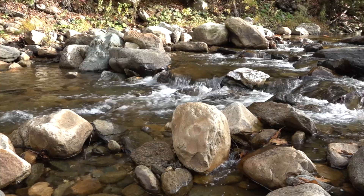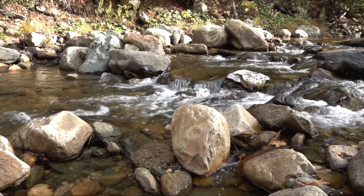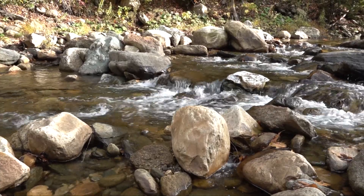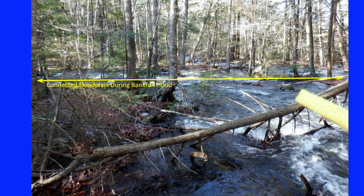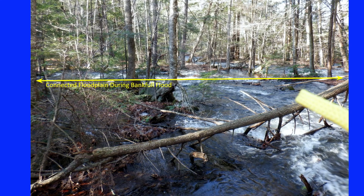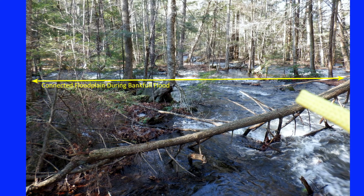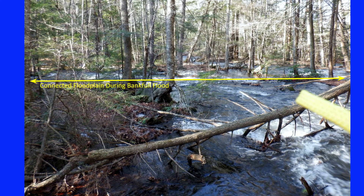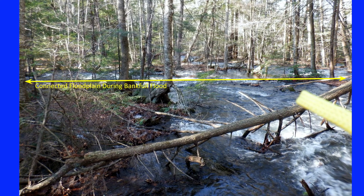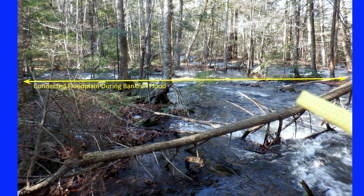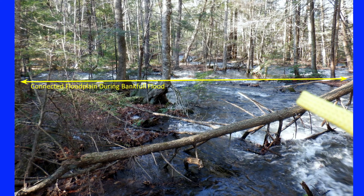During restoration projects, you often design an incision ratio of 1.3 to 1, meaning the bankful flood can spill out onto the floodplain. This relieves the energy in the channel, allows the attenuation of sediments, uptake of nutrients, and also reduces flood velocities to allow for less erosion.